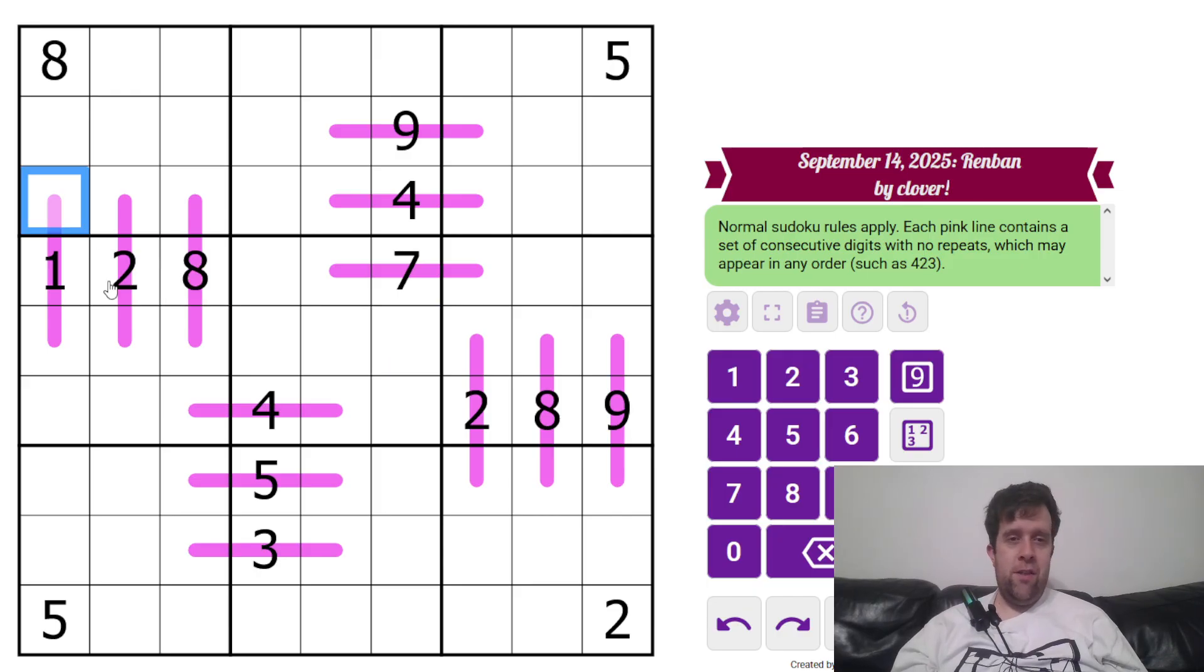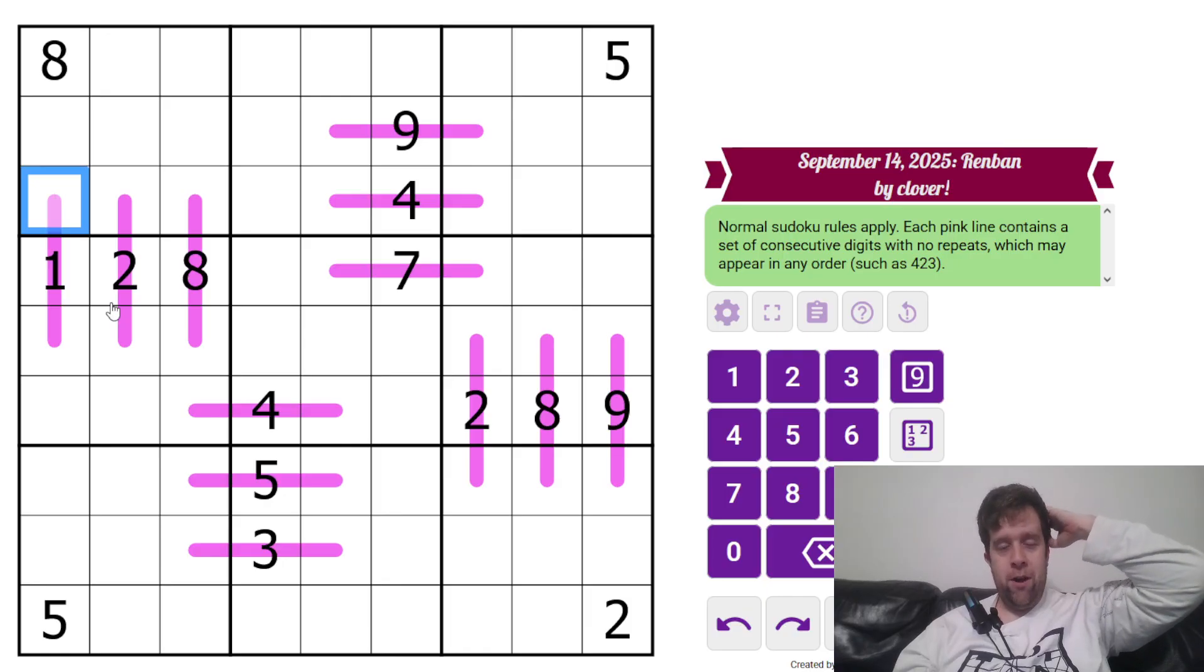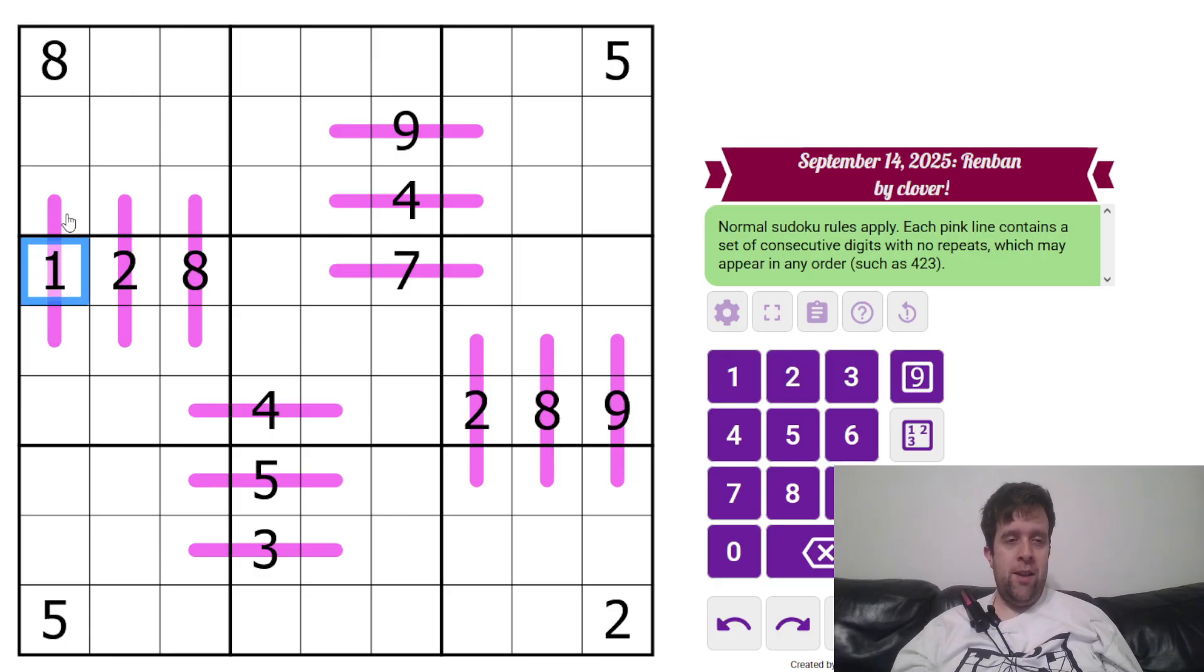August was pretty tricky. We went slightly harder than we normally do. Both Clover and I have been recalibrating. This one needs to be 1, 2, 3, because that's the only way you can have 3 consecutive digits. 2 can't be in this one, so this has to be 2 and 3.